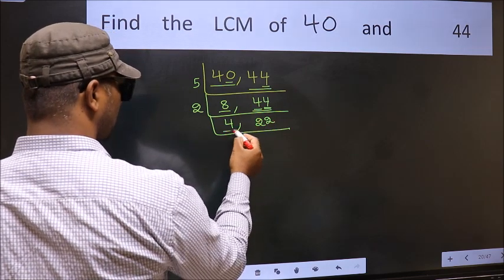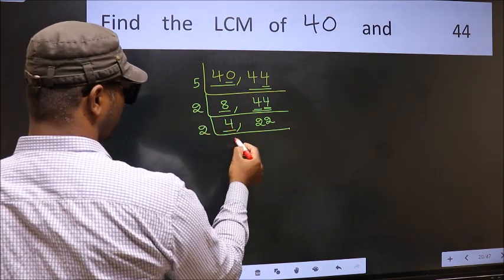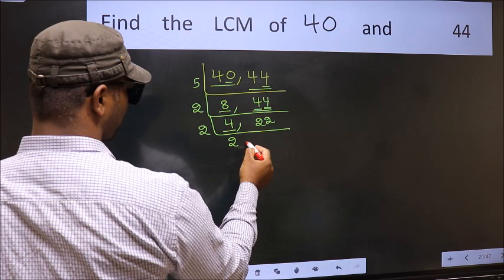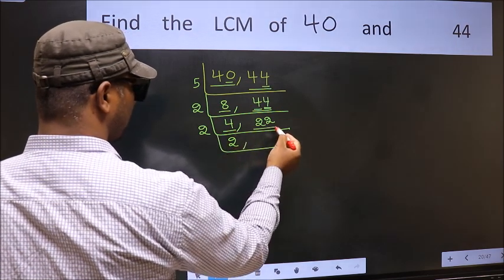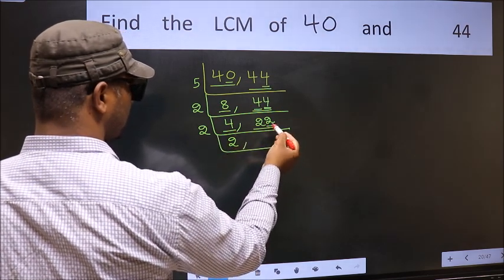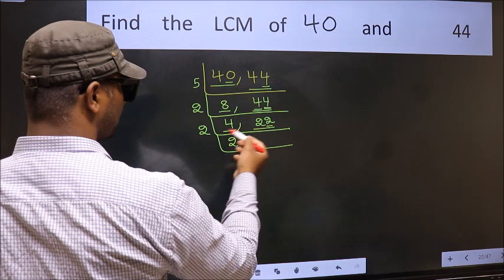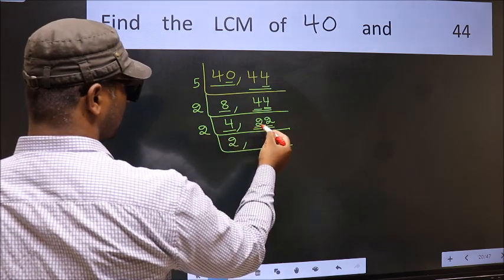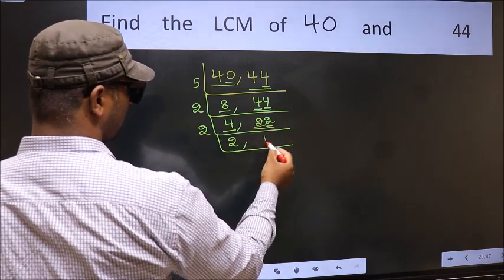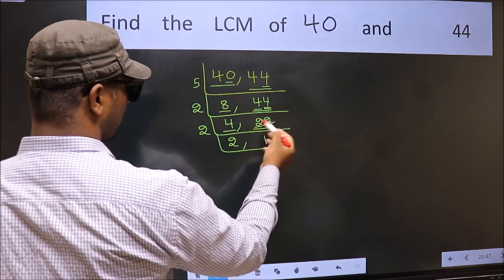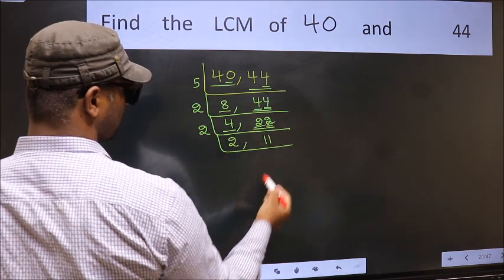Now here we have 4. 4 is 2 twos, 4. The other number is 22. Last digit 2 — even, so this is divisible by 2. First number: 2. When do we get 2 in the 2 table? 2 ones are 2. The other number: 2. When do we get 2 in the 2 table? 2 ones are 2.